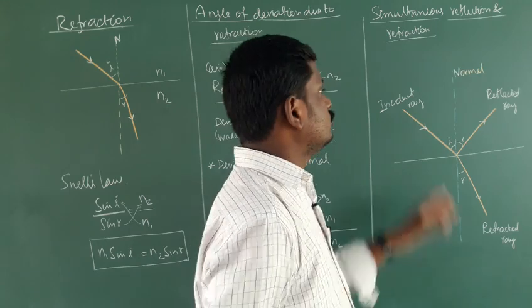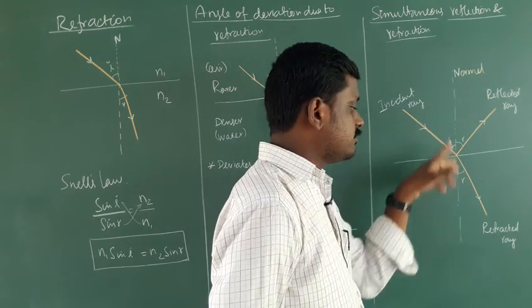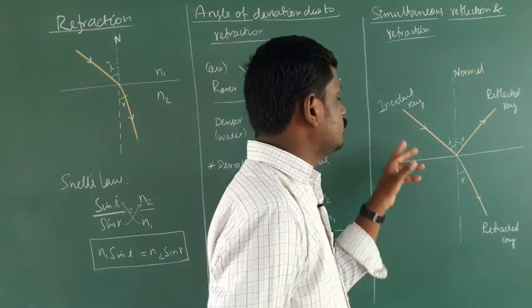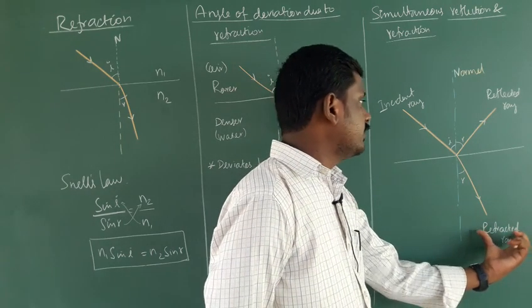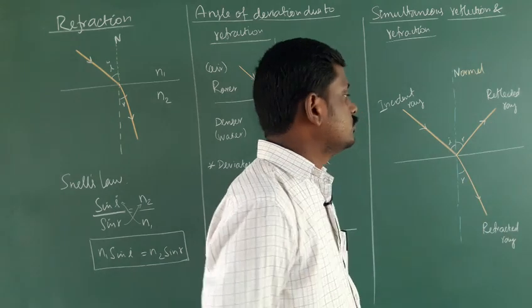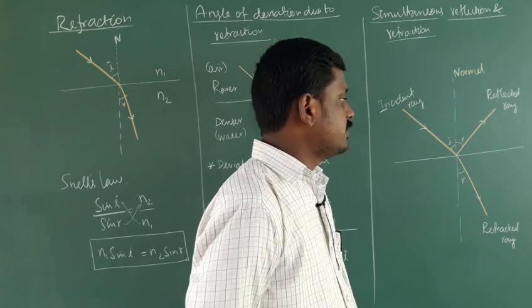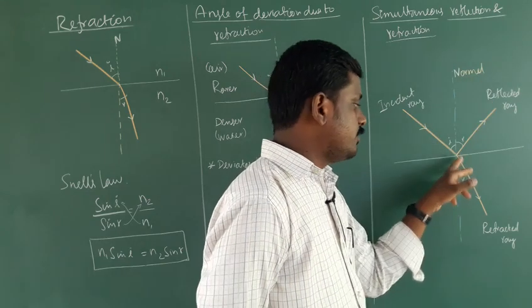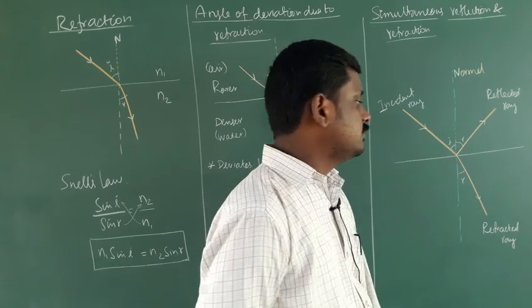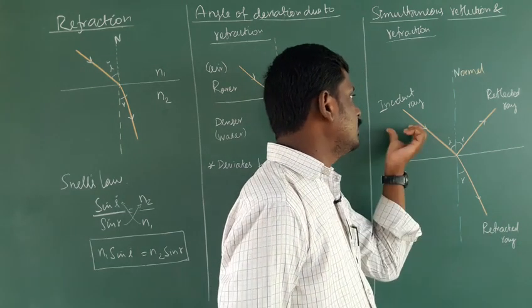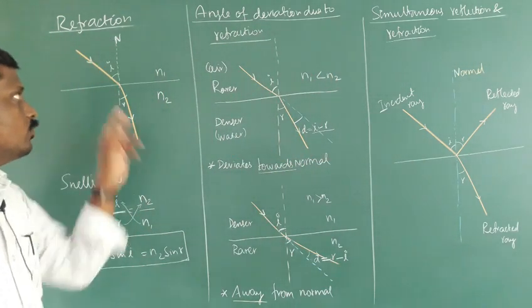Now, simultaneous reflection and refraction. When light is incident on a refracting surface, both reflection and refraction occur at the same time. Part of the light is reflected and part is refracted. The intensity of the refracted ray is less than that of the incident ray, since energy is split between the two.